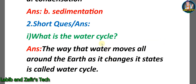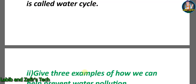Now let's go through some short question answers. First question: What is the water cycle? Answer: The way that water moves all around the earth as it changes states is called the water cycle.